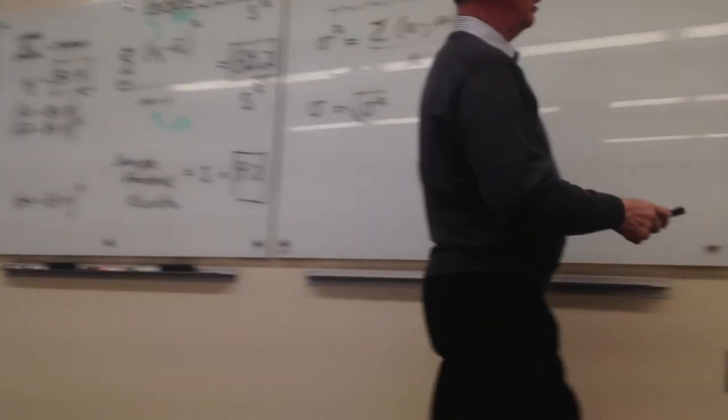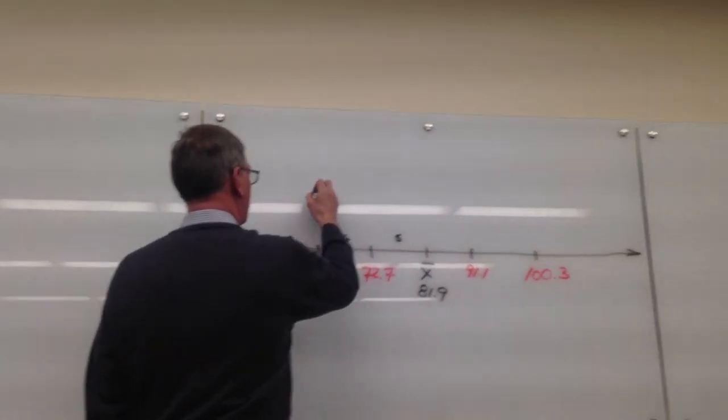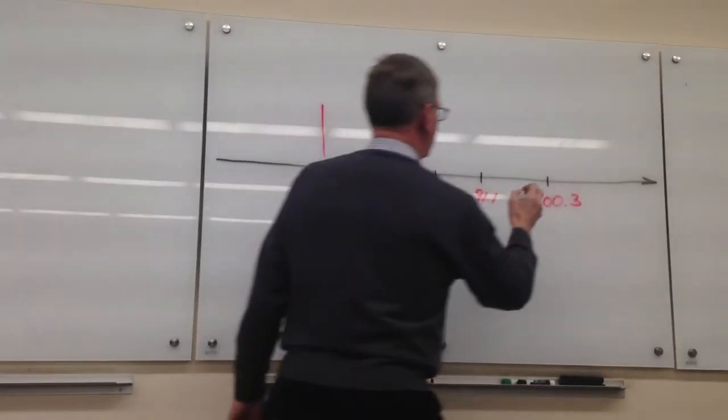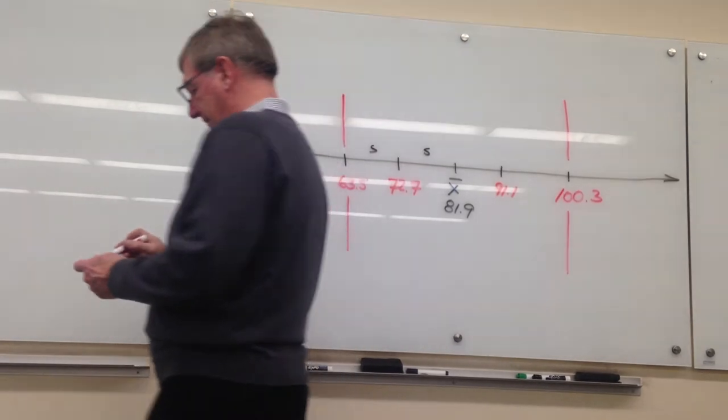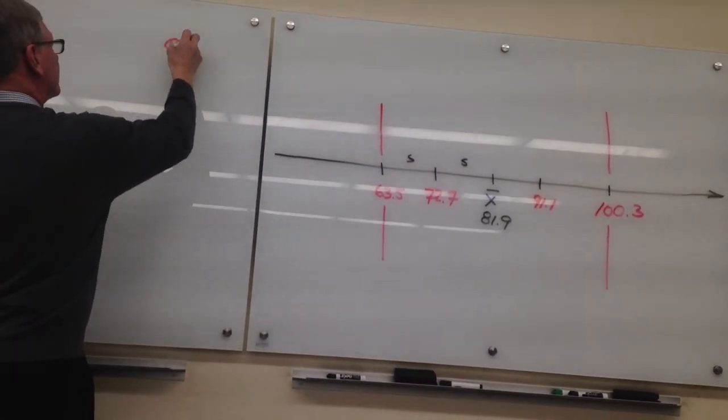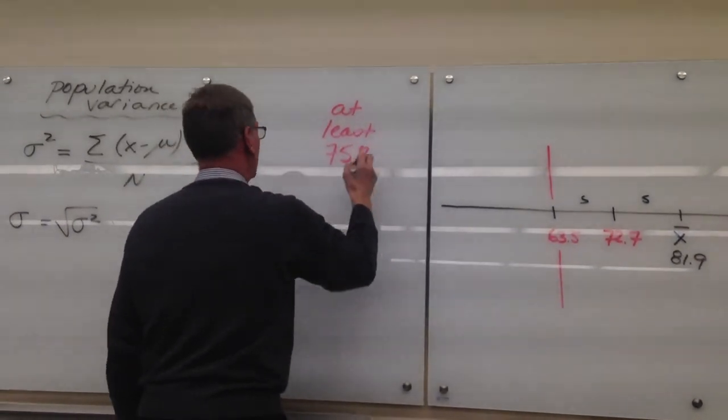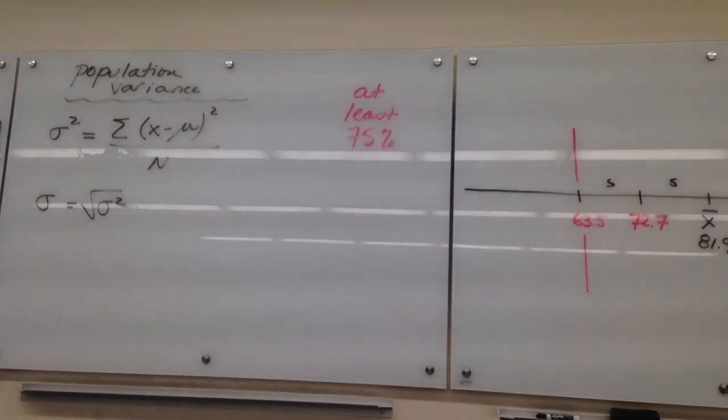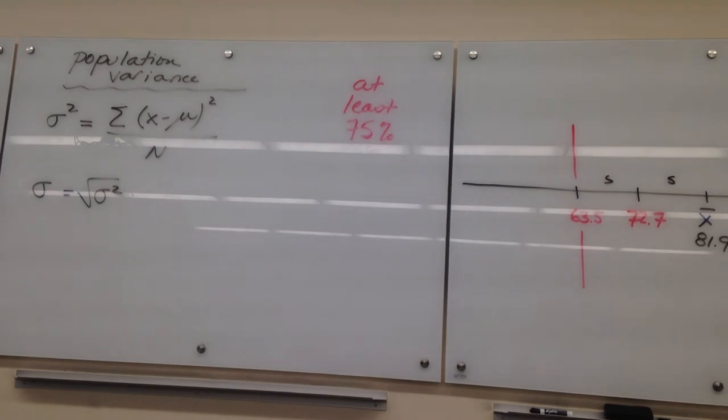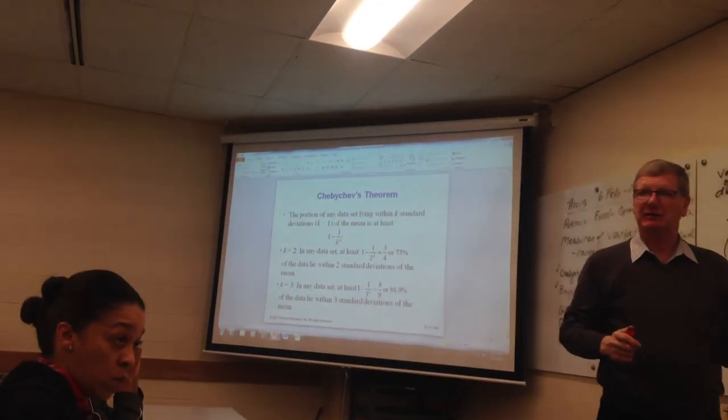So if we go two to the left, which puts us right here, and two to the right, he's saying you should have at least 75% or three quarters of your data based on that formula, one minus one over K squared. Does everybody say, oh, I got to 75% or three quarters? All right, so tell me, do we have at least 75% of our data?